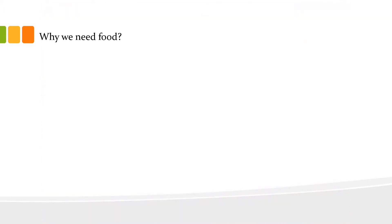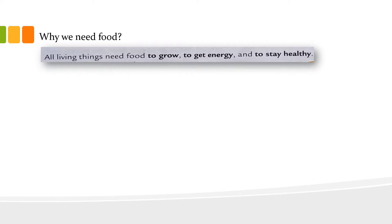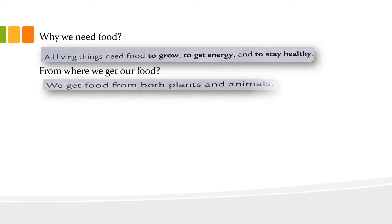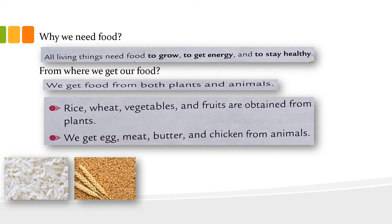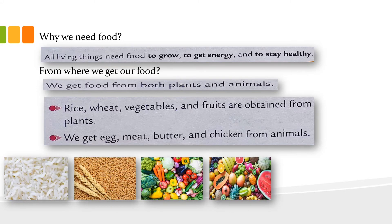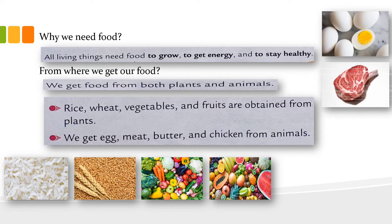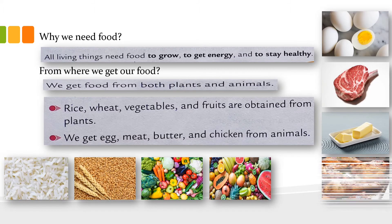Why do we need food? We need food to grow, to get energy, and to stay healthy. We can get our food from both plants and animals. From plants we get rice, wheat, vegetables, and fruits. From animals we get egg, meat, butter, and chicken.